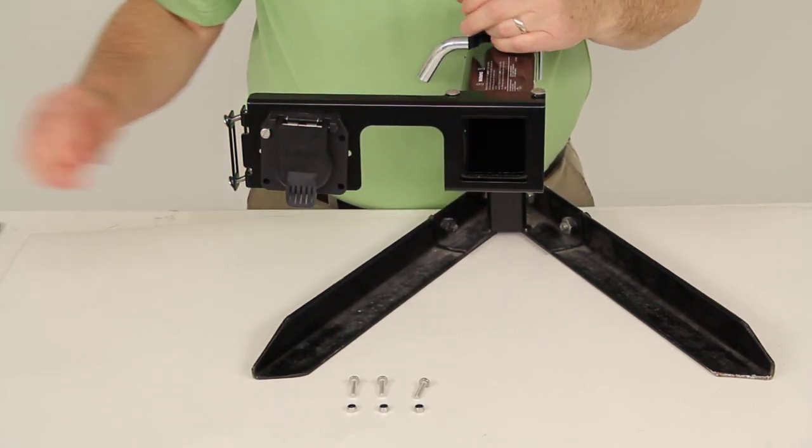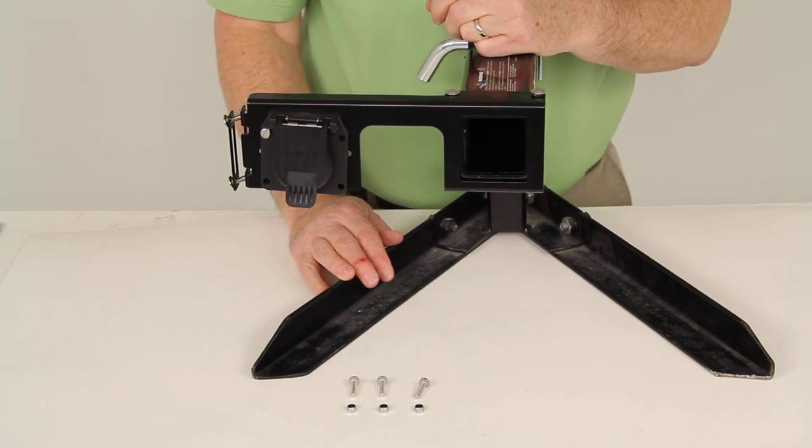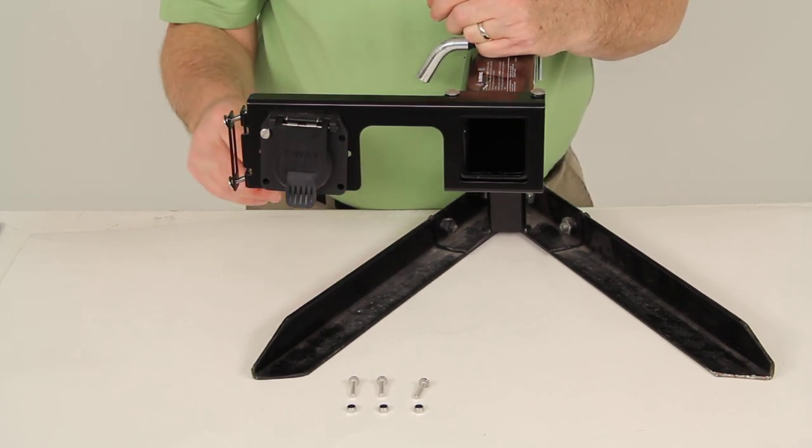That should do it for the review on part number C-5800, the Curt Easy Mount electrical bracket.